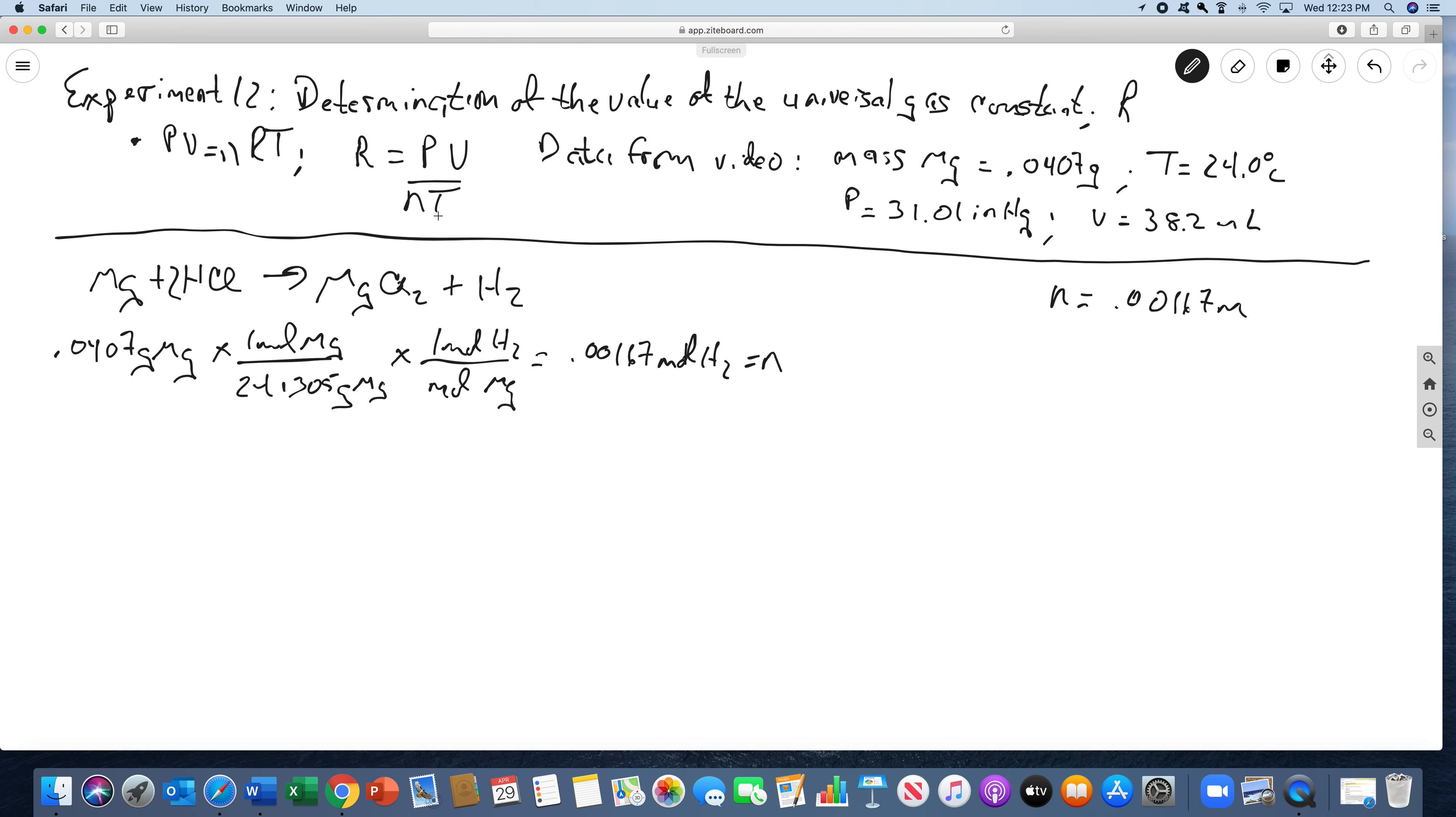The next thing we have to do, we'll calculate the temperature. We'll just go through the way the lab does it. So the temperature was 24.0 degrees C. We want it in Kelvin, so we add 273.15. That will give us 297.2 K. That's our temperature. T is 297.2 K.